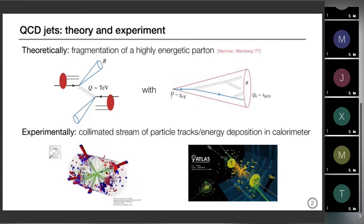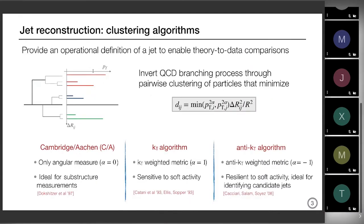The natural question is how these two things come together. In principle you have your event at the LHC — now what do you decide comes inside this cone? To do that we need an operational definition of a jet: clustering algorithms that provide a way to enable theory-to-data comparison. The logic behind these clustering algorithms is to invert the QCD branching process. We do pairwise clustering of particles that minimize a metric that exploits the infrared and collinear divergences of QCD — essentially the pts of the particles, an exponent alpha, and the angular distance.